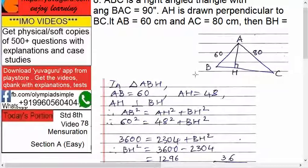Now, in triangle ABH, AH is perpendicular to BH, right? So, AB equals to 60, AH equals to 48. We just now found out. AH perpendicular to BH.